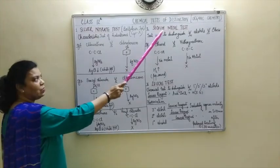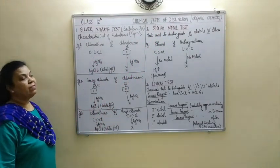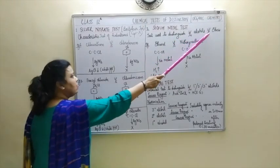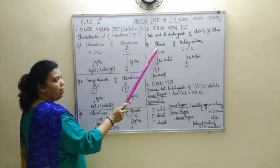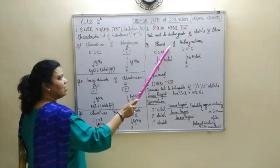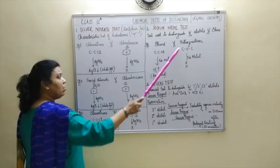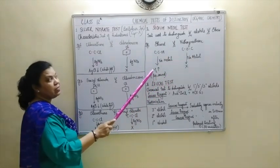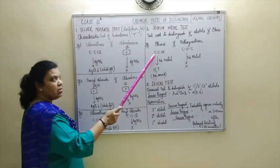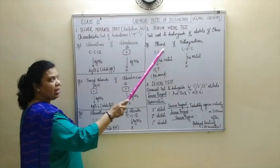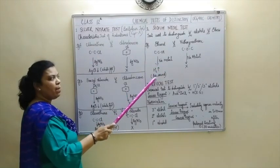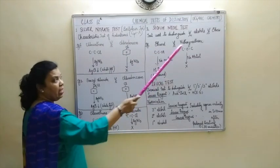Let us move on to the second test, and that is the sodium metal test. This test is basically used to distinguish between alcohols versus ethers. Suppose you have ethanol and methoxymethane and you are asked to give a chemical test to distinguish between these two. Add sodium metal to samples of both and you will get a brisk effervescence of a colorless, odorless hydrogen gas which burns with a pop sound in case of alcohol. Ethers do not give this test.